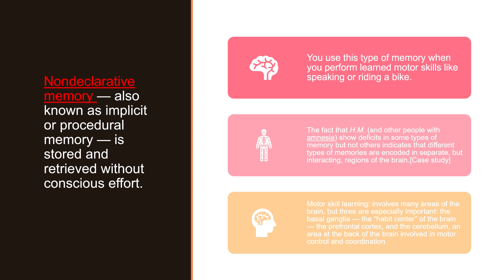Now my favorite type of memory: non-declarative memory, also known as implicit or procedural memory. It's stored and retrieved without any conscious effort — you don't have to think about it to do it. The best example is riding a bike. We all remember falling repeatedly trying to learn, but once you get good at it, you don't need any conscious thought to balance and ride. You know where the controls are, how to pedal, how to go up hills. This is the same as shooting a basketball — the difference between a beginner and an NBA player like Steph Curry or Michael Jordan, who've shot so many times they don't have to think about it.